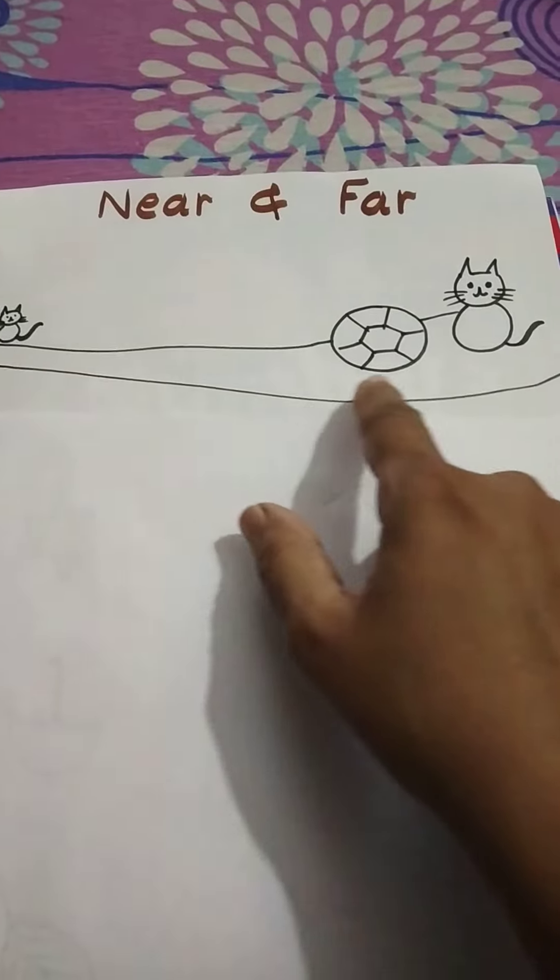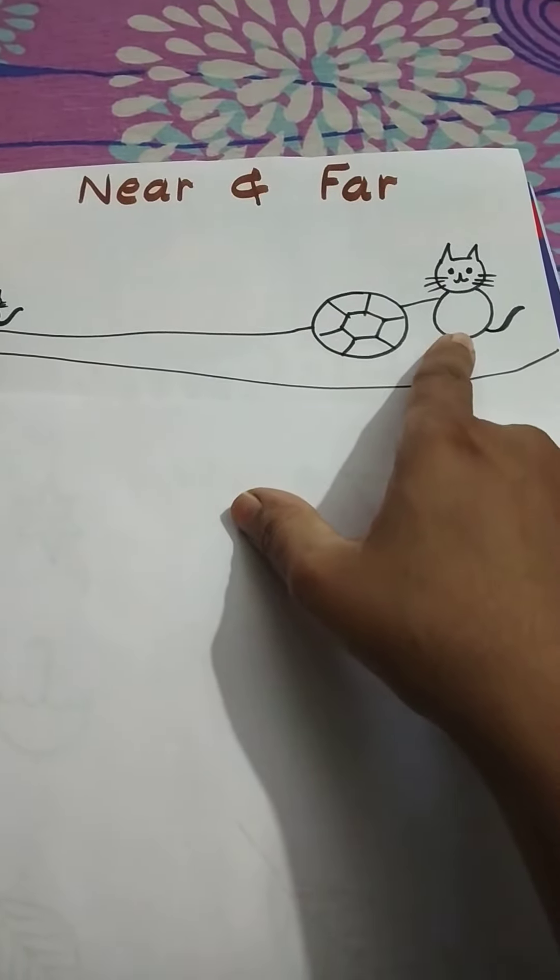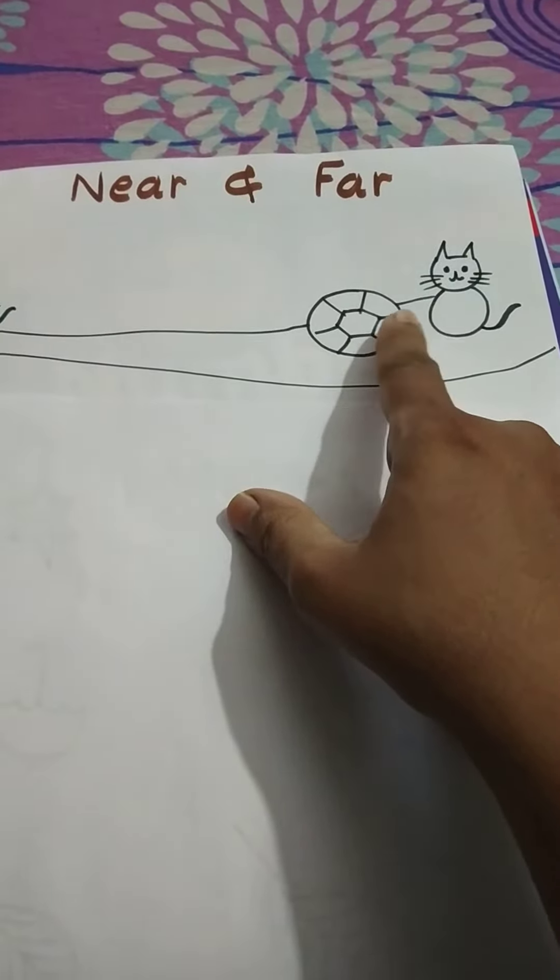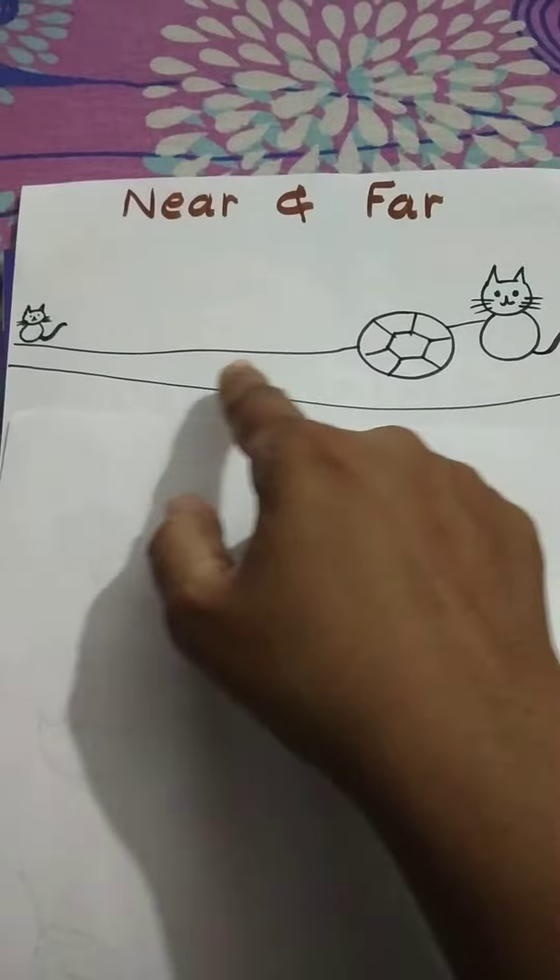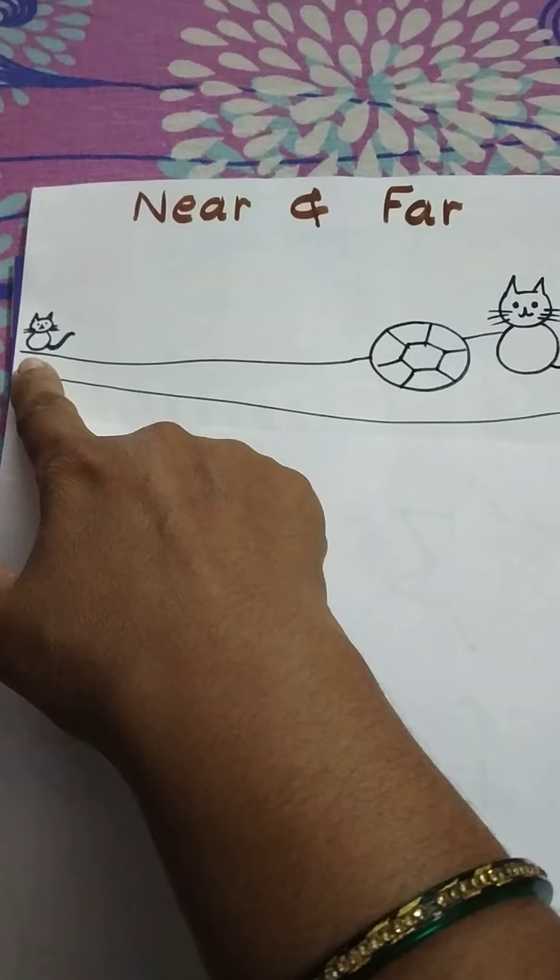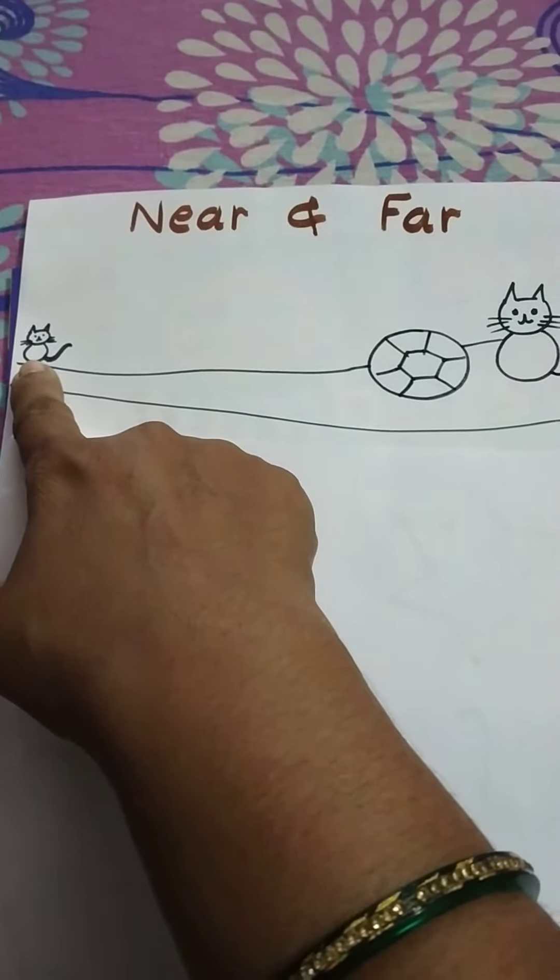You can see this road and there is a ball. And the cat is near the ball, the cat is sitting near the ball. And on the same road, you can see this cat. You can see she is far away from the ball.